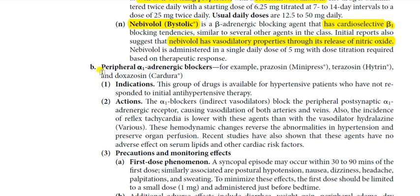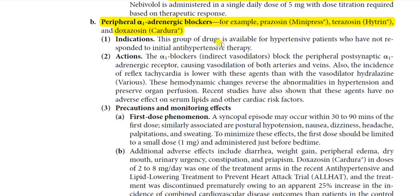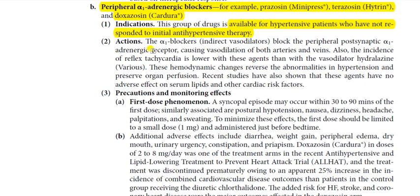Now we come to peripheral alpha adrenergic blockers, or peripheral alpha-1 blockers — for example, prazosin, terazosin, and doxazosin. This group of drugs is available for hypertensive patients who have not responded to initial antihypertensive therapy, making them second-line therapy. The alpha-1 blockers are indirect vasodilators that block peripheral post-synaptic alpha adrenergic receptors, causing vasodilation of both arteries and veins. The incidence of reflex tachycardia is lower with these agents than with the vasodilator hydralazine.